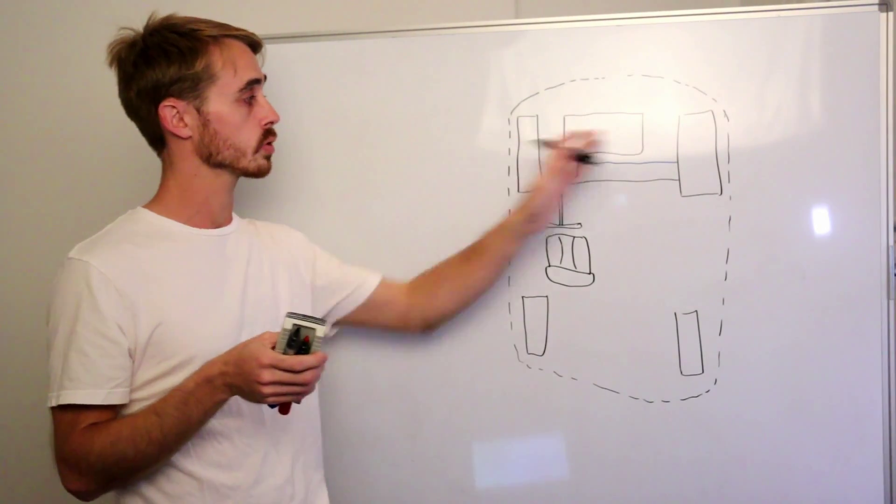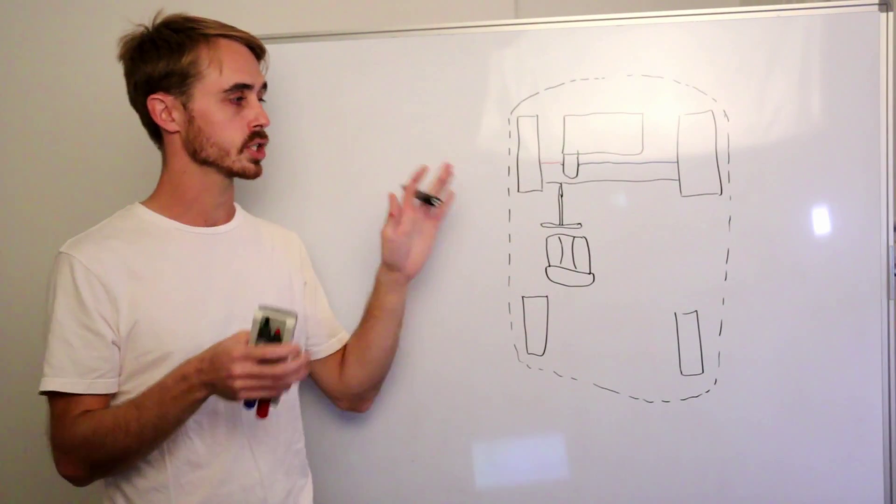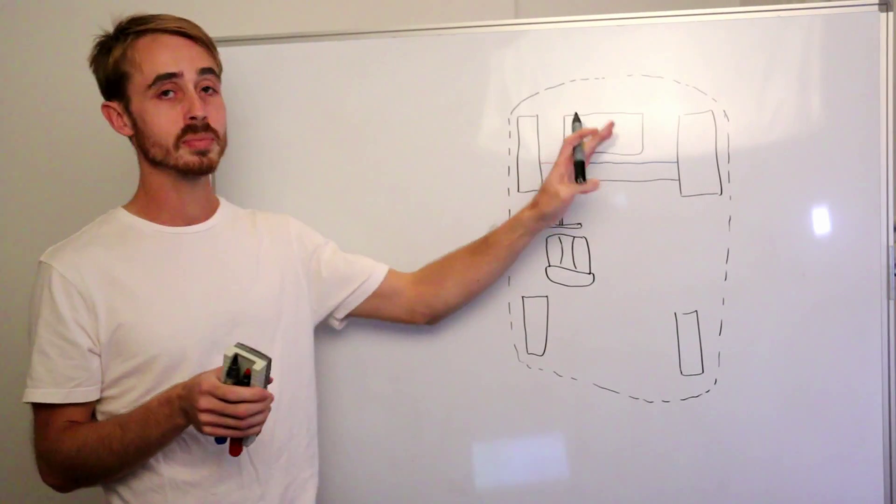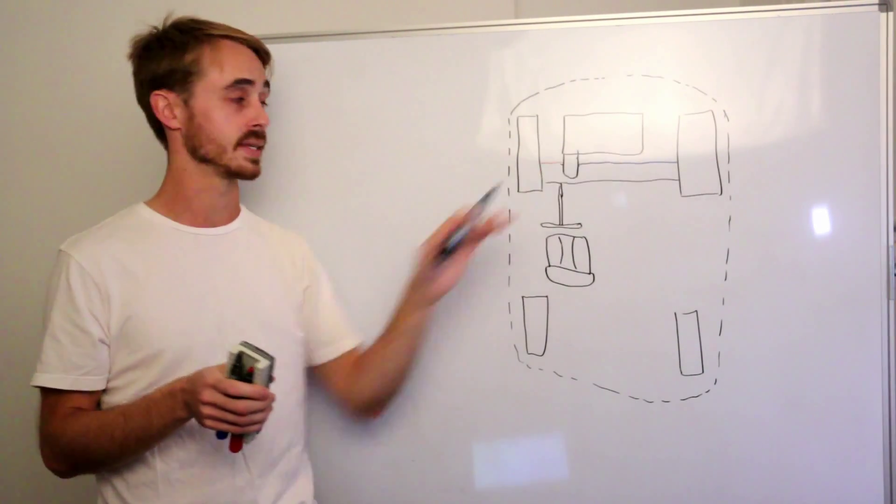Torque steer is basically when you're applying some sort of throttle input and it results in a change of the dynamics of the car so this usually means that it will pull to the left or the right as a result of throttle.